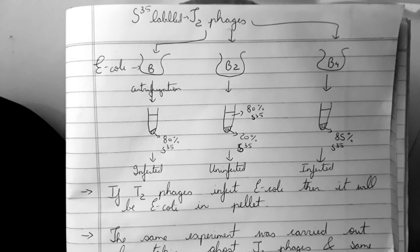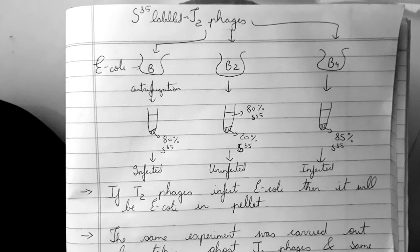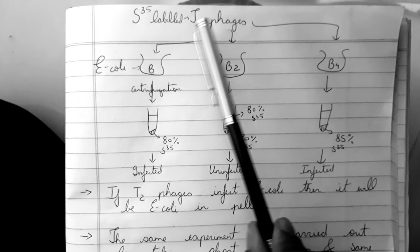What he did in the experiment was he took the T2 phages which were S35 labeled. This means that S35 labeled proteins.